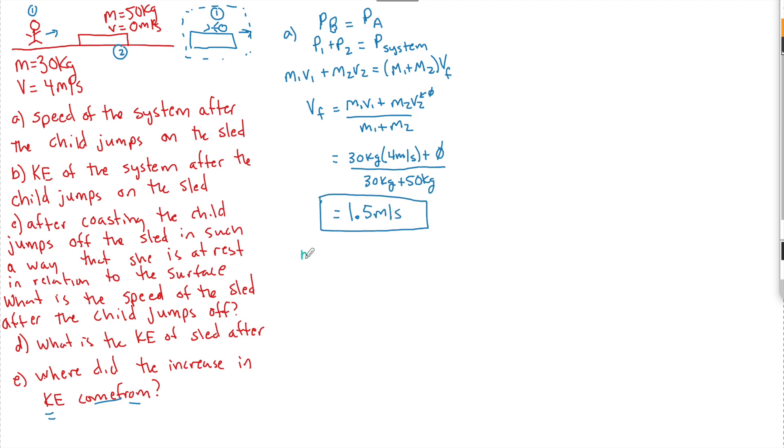Now for part B, to find the KE, the kinetic energy of a system is just one half MV squared. So we have one half. Remember, this is the total system's kinetic energy. So this is going to be 80 kilograms, the sled plus the child, plus the speed that we just solved for. Do not forget the squared. I say it all the time. Do not forget the squared. We see that this has an energy after of 90 joules.